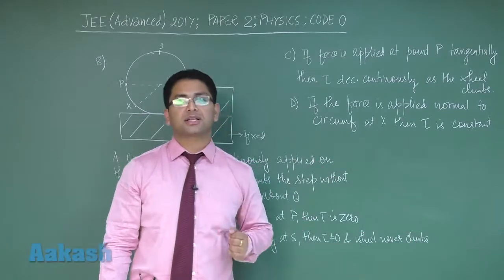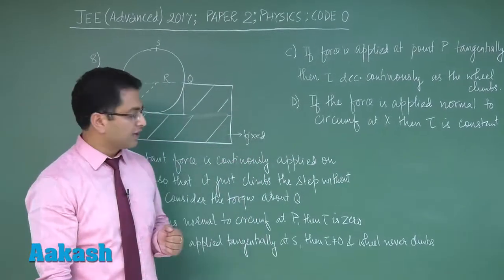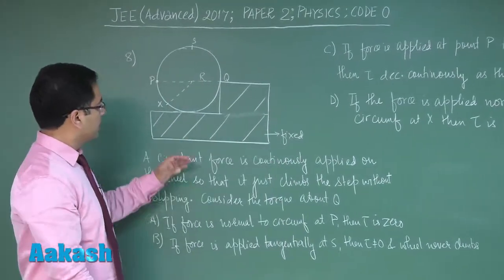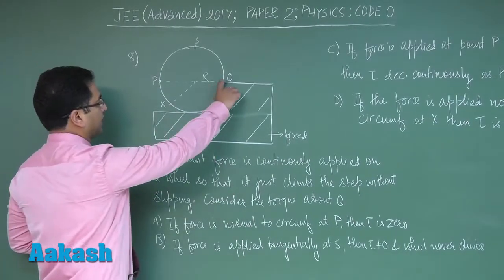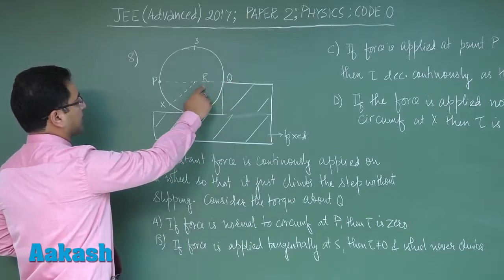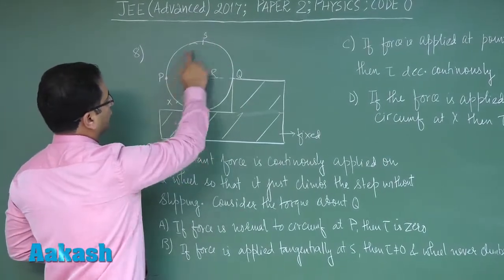So straightforward, let's go into the question. There is a fixed step, and the step is of height r, where r is the radius of the wheel. On the wheel there are four specific points given: P, Q, S, and X.